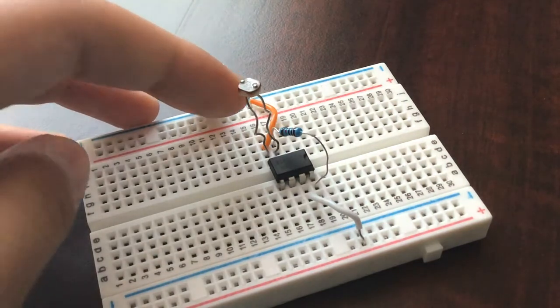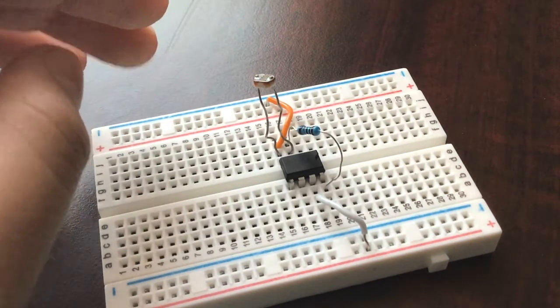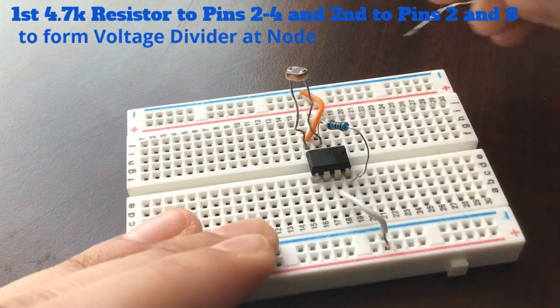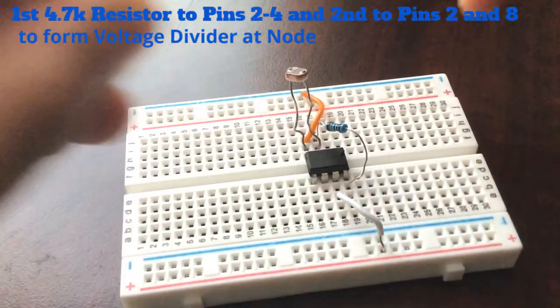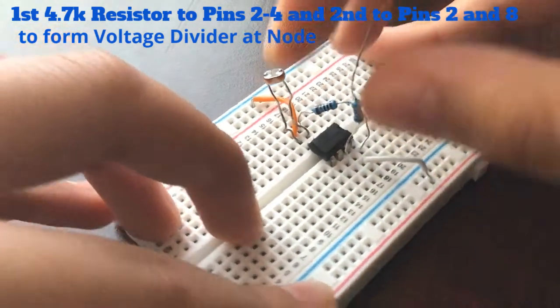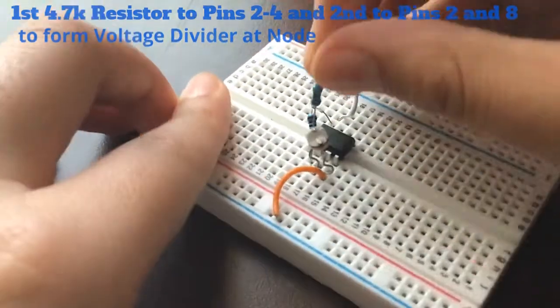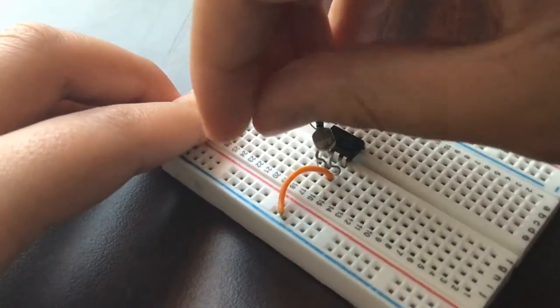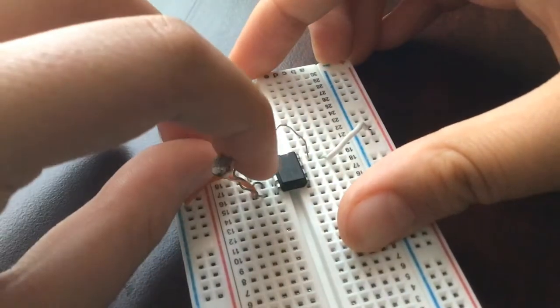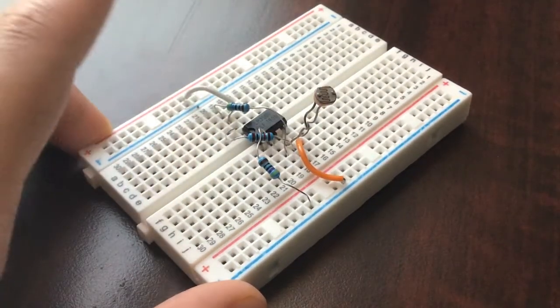We take a 4.7 kilo ohm resistor and place one of them between pin 2 and pin 4, and pin 2 and pin 8. So one will go to the positive rail and one will go to the negative. Pin 2 is right here, and we can just put this to the positive rail or negative rail because it doesn't really matter. We can do the same thing but we'll connect it to pin... Here I placed pin 2 to pin 8, so that's connected to the positive rail.